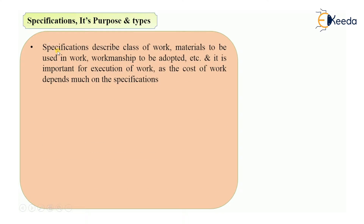First, what is specification? Specification describes the class of work, then the material to be used in the work, and the workmanship to be adopted. It will describe what is the class of work, what materials to be used, what quality of material you should use in the construction work — whether it is low quality, medium quality, or high quality material. Then what type of workmanship you should adopt for a particular item of work is also described by the specifications.